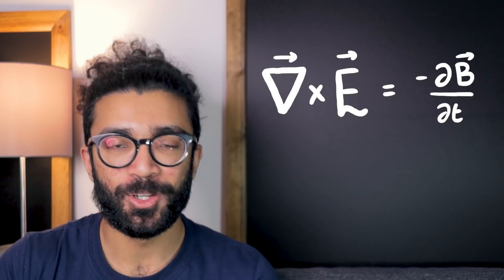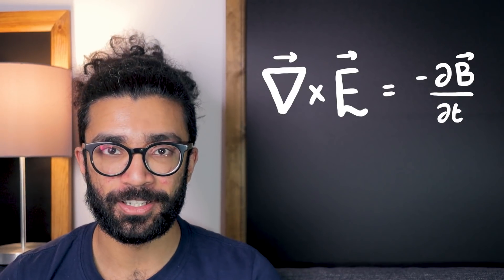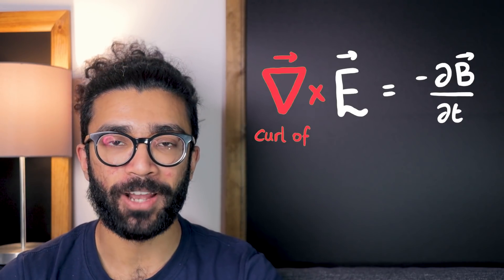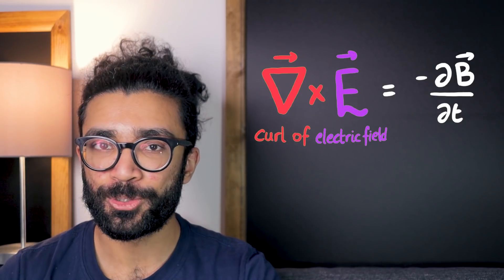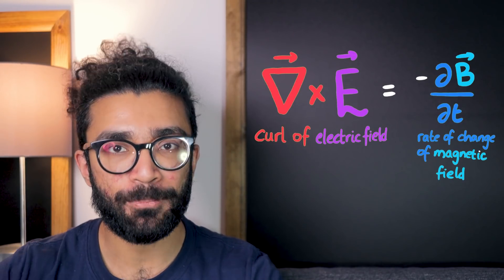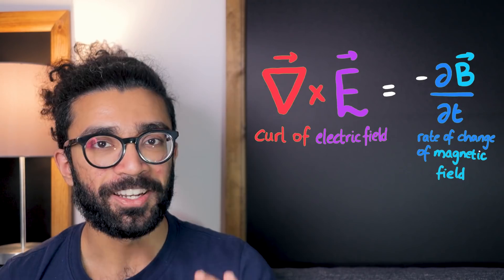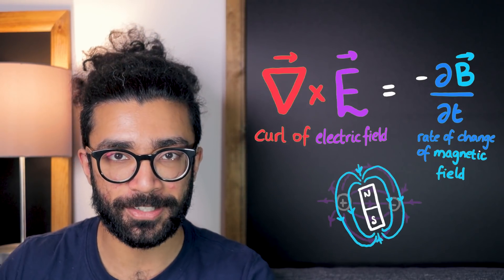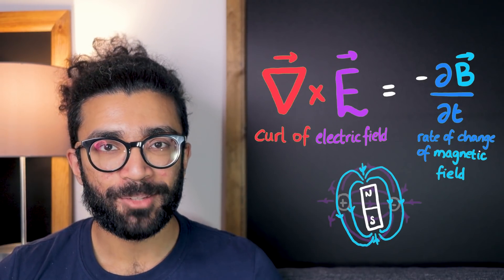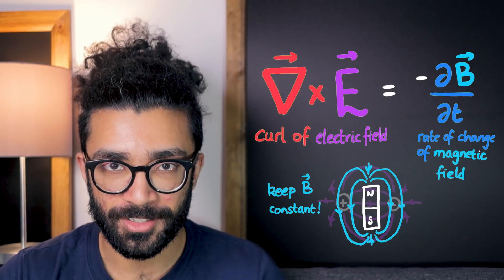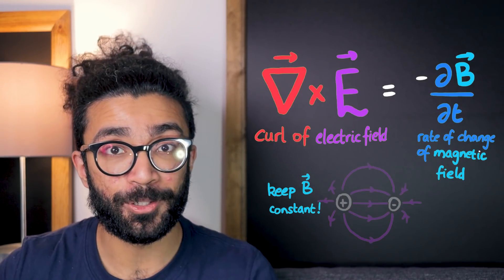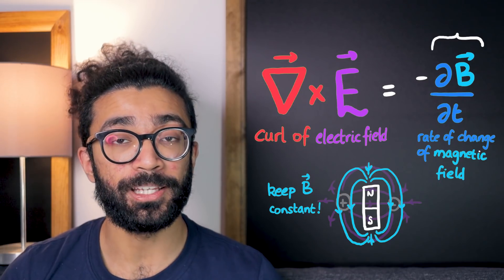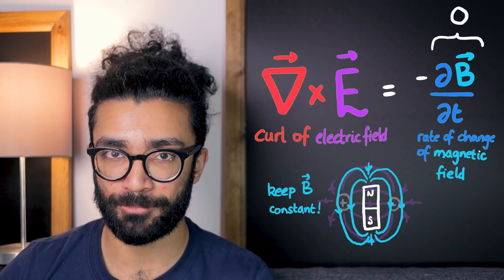Specifically this equation, commonly known as one of Maxwell's equations. Basically what we see here is that the curl of any electric field E in a given region of space is equal to minus the rate of change of any magnetic field B in that same region of space. In other words, the curl of an electric field is related to how quickly a magnetic field changes over time. To keep things simple, we're going to assume that the magnetic field in the region of space we want to study is constant — it might not even exist, or if it does, it's not changing over time. This means that dB/dt must be equal to zero, since the rate of change is zero.